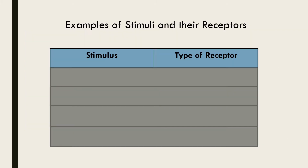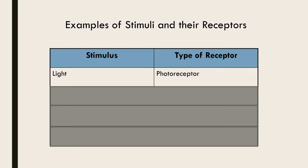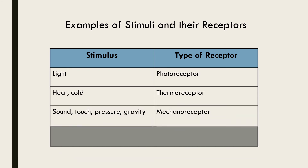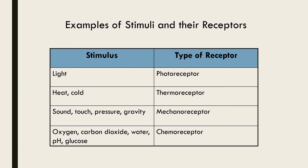Here are some examples of stimuli and the type of sensory receptor that detects them. Photoreceptors are specialised neurons that are able to detect and react to light. Thermoreceptors detect changes in temperature. Mechanoreceptors detect mechanical forces including movement, tension and pressure. For example, during hearing, mechanoreceptors in hair cells in the inner ear detect vibrations conducted from the eardrum, whereas during touch, mechanoreceptors in the skin and other tissues respond to variations in pressure. Lastly, chemoreceptors detect the presence of chemicals including oxygen, carbon dioxide and glucose.